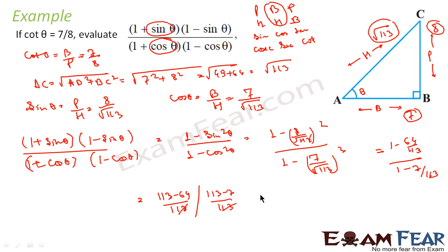113 cancels. So what I get is 113 minus 64 is 49, and 113 minus 7 is 106, giving 49/106. Very simple. I knew the value of cot θ, I found the value of sin θ and cos θ, and I just put the value in.